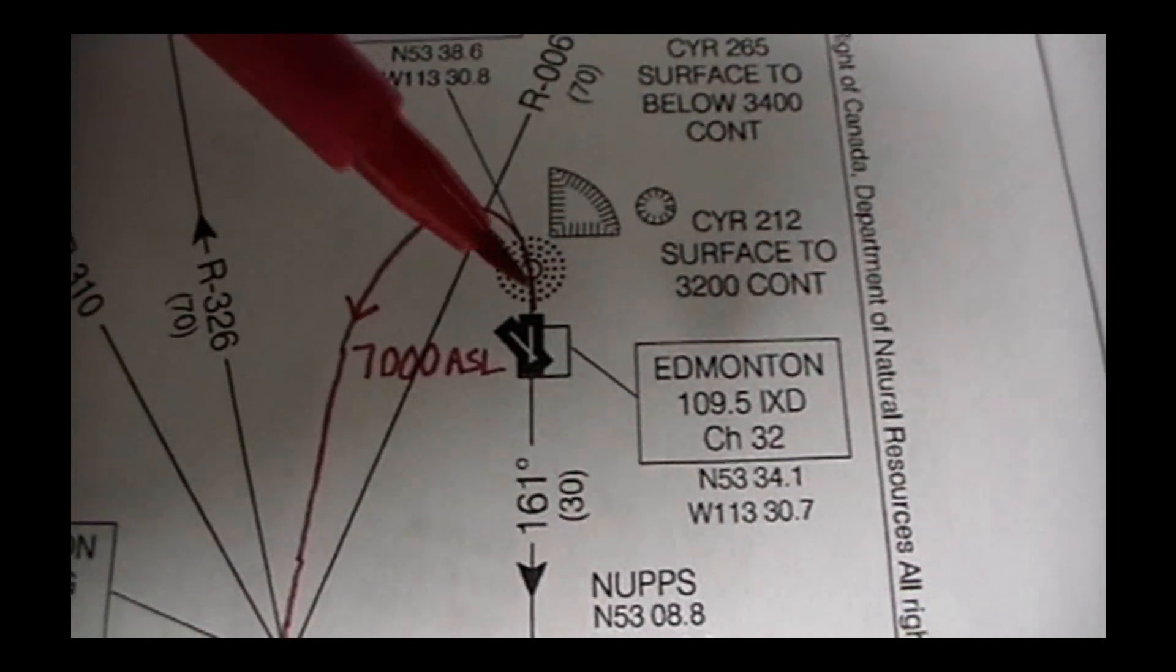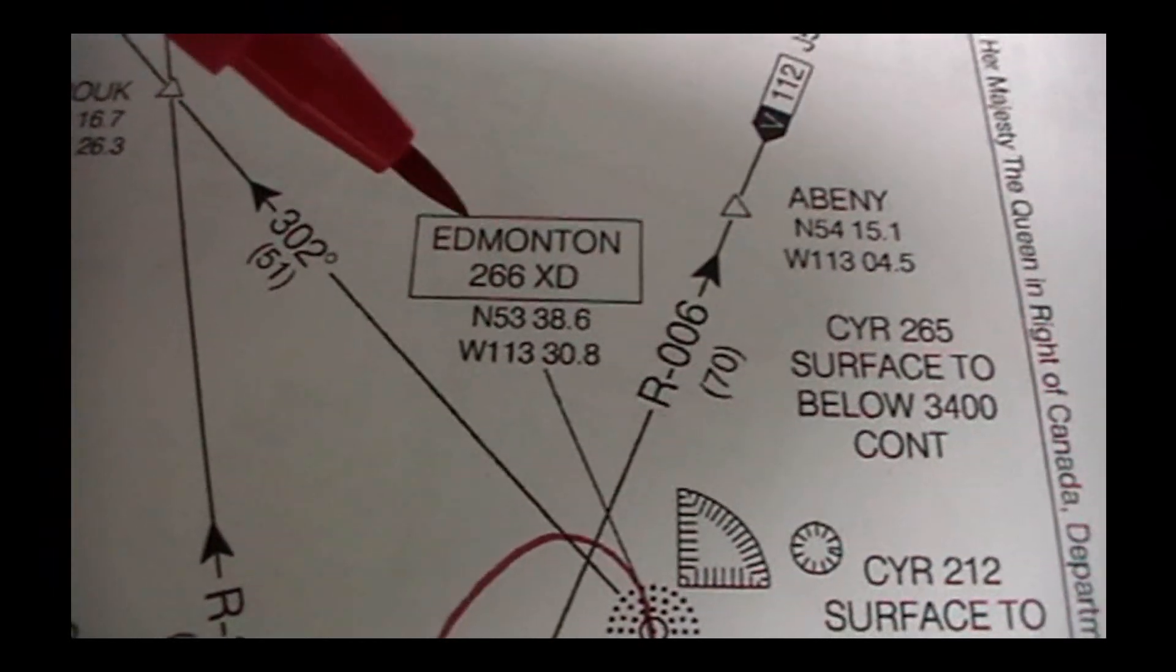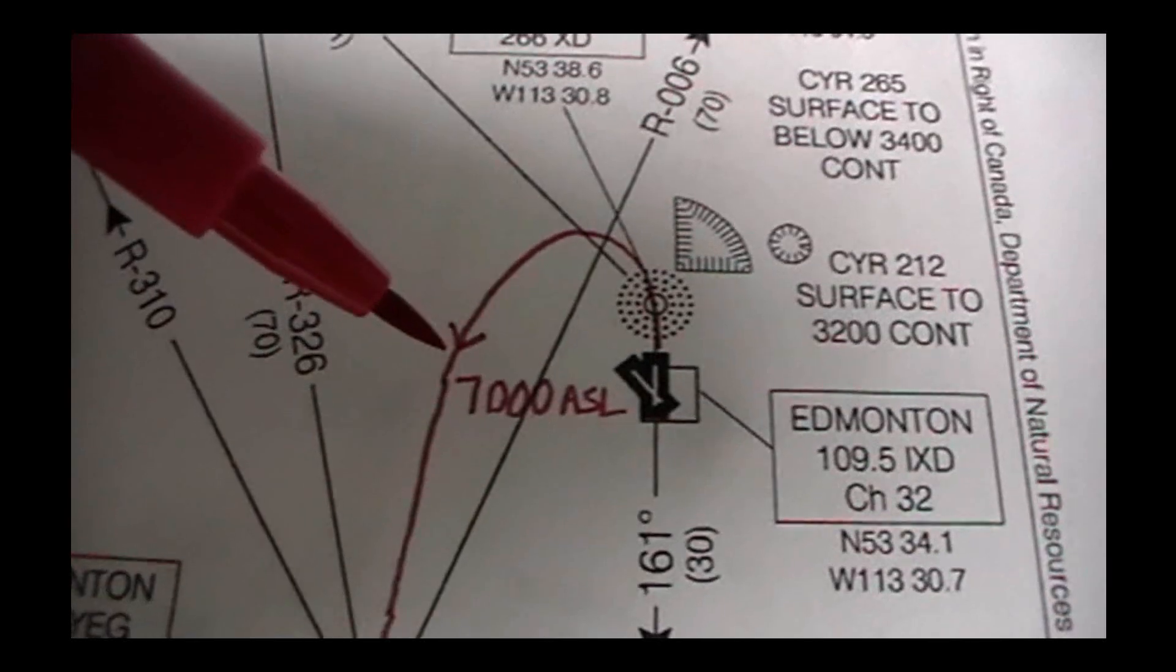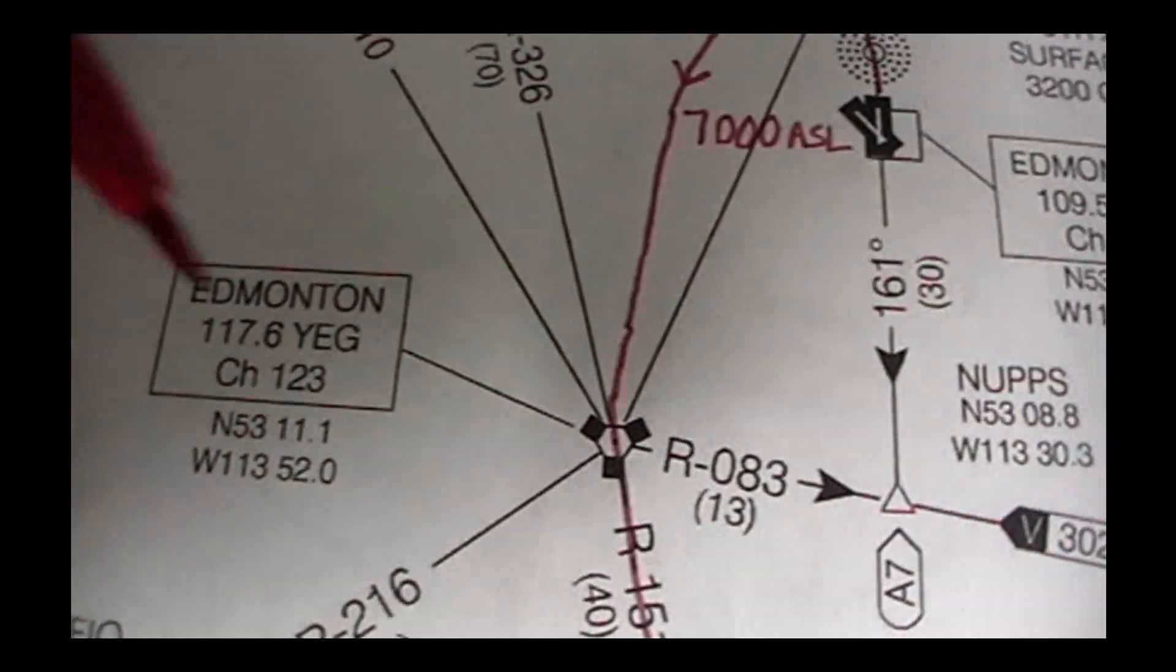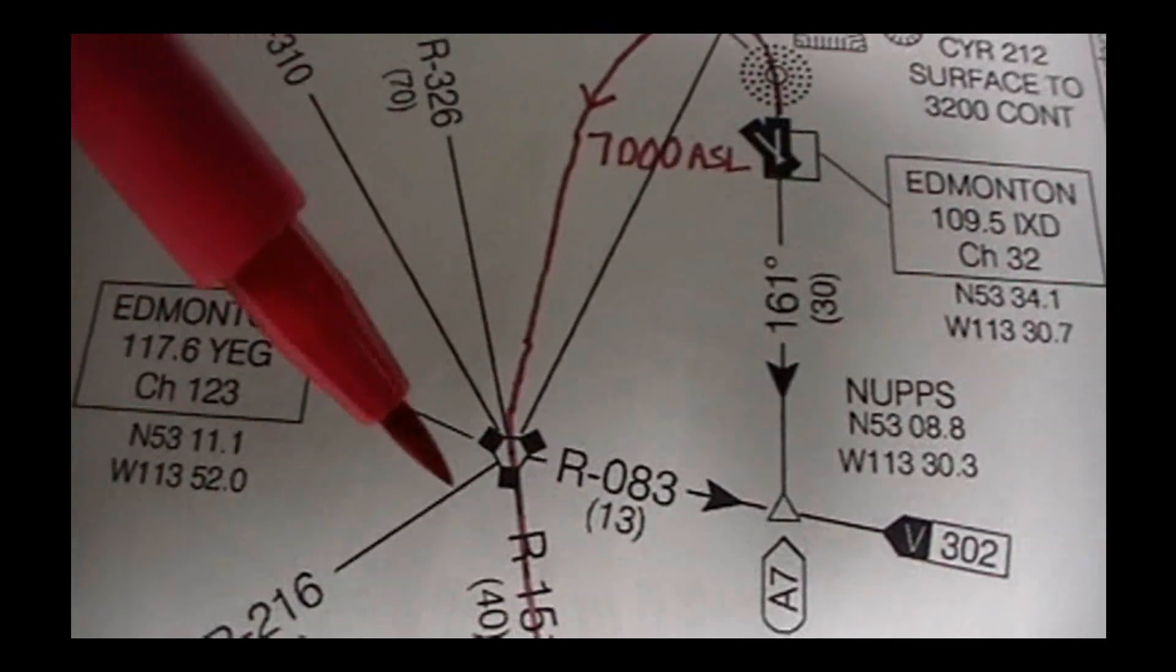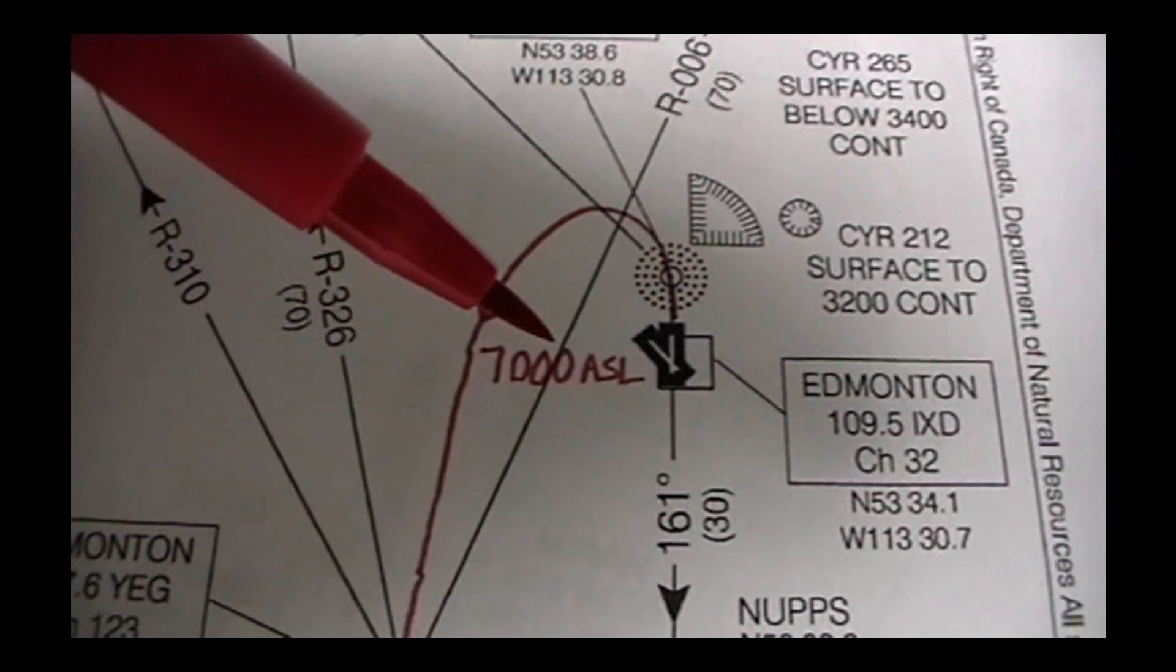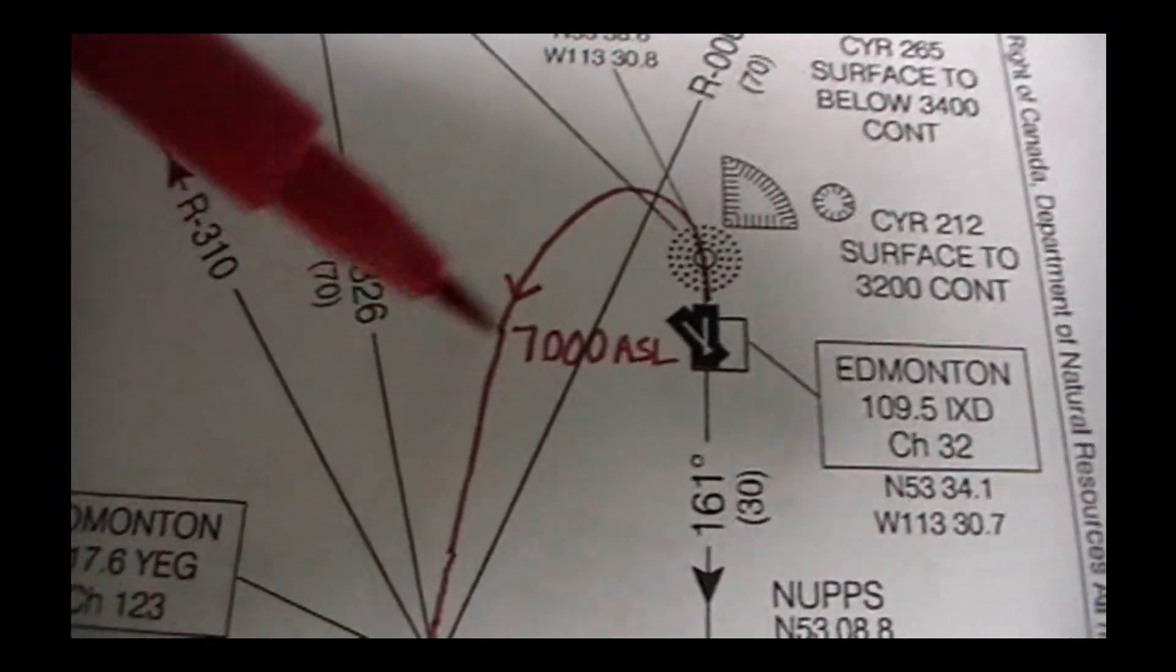So we climb over, cross over this NDB, which the information is here, Edmonton XD NDB. The frequency is 266. So I would be turning here to intercept this, the Edmonton VOR. Here's the frequency to intercept that VOR. This shape here is for the VOR. So according to the chart, I would be climbing to 7,000 feet ASL, which is really 9,200 feet MSL because of the elevation.